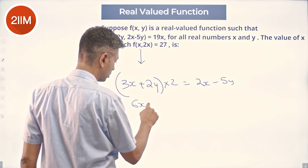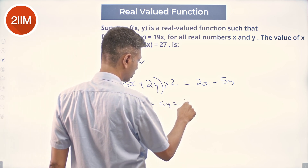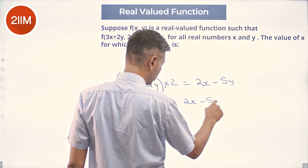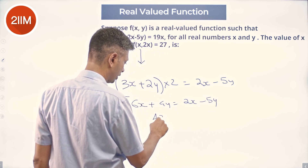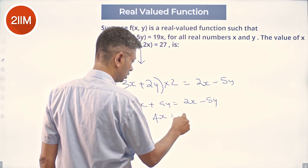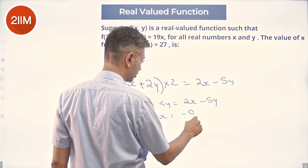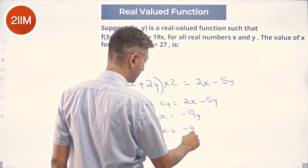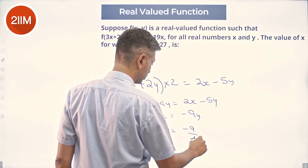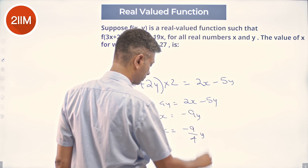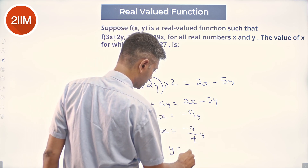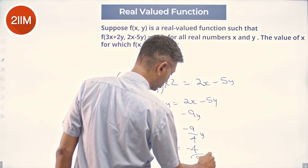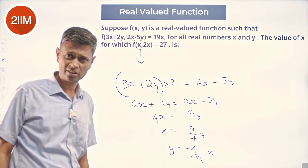So 6x + 4y = 2x − 5y, which gives 4x = −9y, so x = −(9/4)y, or equivalently y = −(4/9)x.